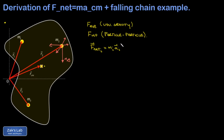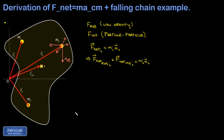We break the net force on the ith particle into internal and external components: F_net_external on the ith particle plus F_net_internal on the ith particle equals m_i times its acceleration. Next we sum this equation over all the particles in the entire body.